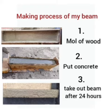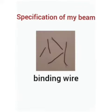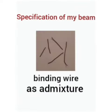I waited until the mixture hardened. After 24 hours, I broke the mold and submerged my beam in water for the next seven days. For the specification of my beam, I used binding wire as an admixture, arranging the pieces of binding wire in such a way that it would give more strength to my beam.